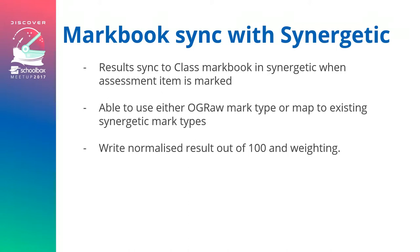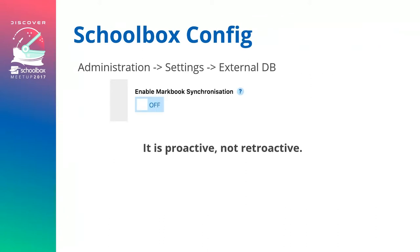The results we write back are a normalised result out of 100. We also send back the comment and the weighting. For those who haven't used the Synergetic Markbook sync, there is a toggle in Administration Settings under External DB — External Markbook Synchronization. When you turn that on, results will start to be populated within Synergetic. If you want previous results to go into your Synergetic database, we can do that via a support ticket. As soon as it's turned on and results are marked within Schoolbox, they're created within Synergetic.